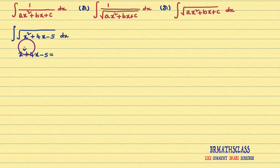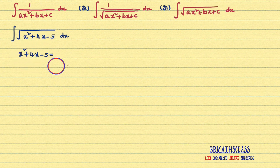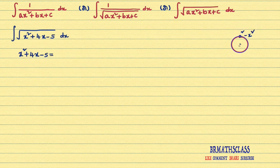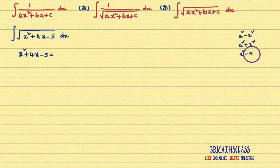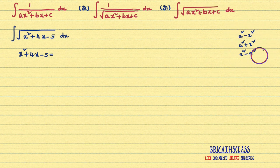So nothing to worry. My main intention is I want to write this expression x² plus 4x minus 5 into any one of these forms: a² minus x², or a² plus x², or x² minus a². To write this expression into any one of these forms, we have a particular procedure.